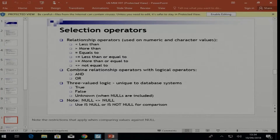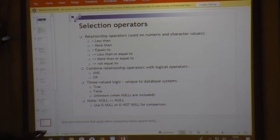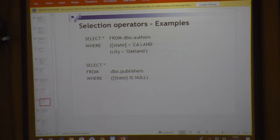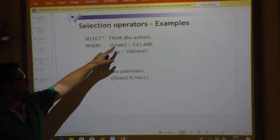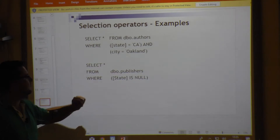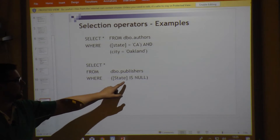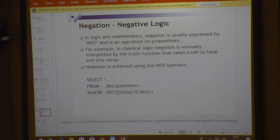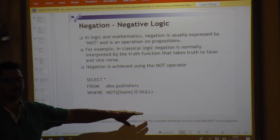NOT performs negation — it changes the actual value around, the same as in Boolean logic. An example using selection: retrieve all columns from the office table where state is 'CA' and city is 'Auckland'. Another example: retrieve all publishers where state IS NULL — bringing back everything where no state is currently defined. NOT reverses that, returning everything where state is NOT NULL.